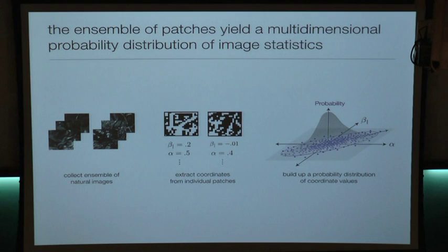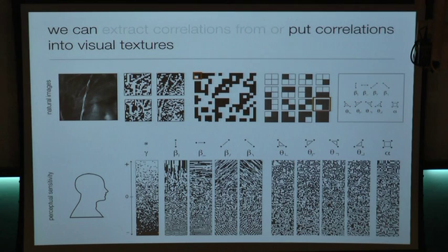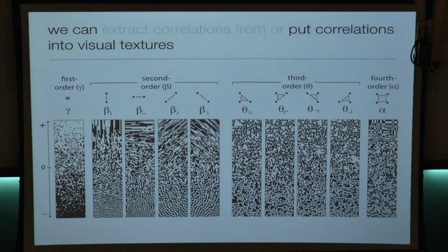Our prediction is that the variability in this distribution will be predictive of human visual sensitivity to the same types of correlations. Not only can we extract coordinate values from an image — we can also use these coordinates to generate synthetic images for psychophysical experiments. What you're looking at are examples of synthetic patterns generated by tuning each coordinate knob independently. Along the zero line is white noise; scanning toward strong positive or negative values moves toward strong correlations or anti-correlations. Tuning up second-order coordinates generates line-like structures, third-order coordinates generate triangular structures, and the fourth-order coordinate generates patchy structures.